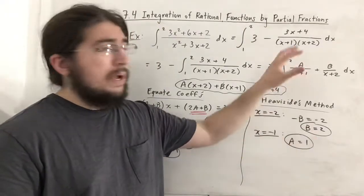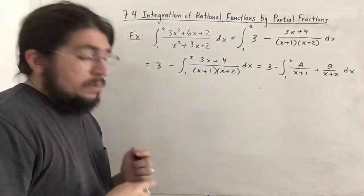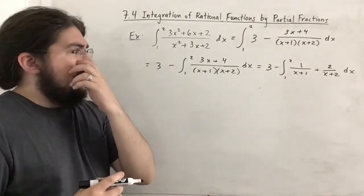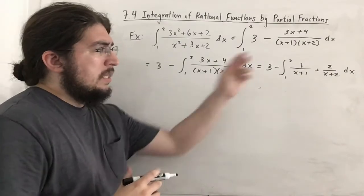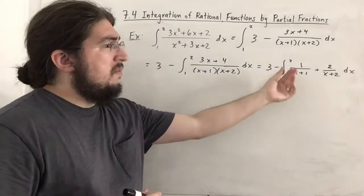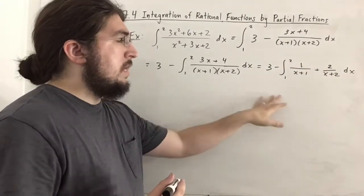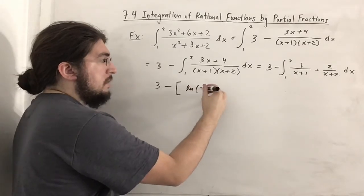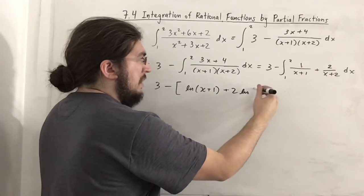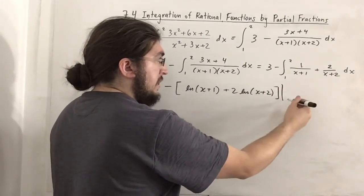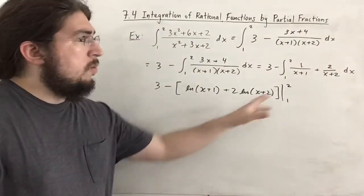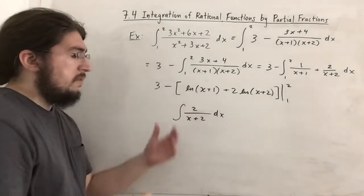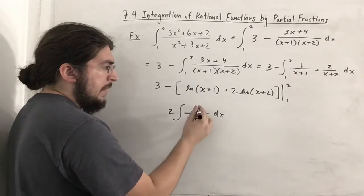With a equals 1 and b equals 2, we substitute back: 3 minus the integral from 1 to 2 of 1 over (x plus 1) plus 2 over (x plus 2) dx. Each term integrates via u-substitution where u equals the denominator, giving ln of that denominator. Since du equals dx in each case, the antiderivative is 3 minus ln|x plus 1| plus 2 ln|x plus 2|, evaluated from 1 to 2.